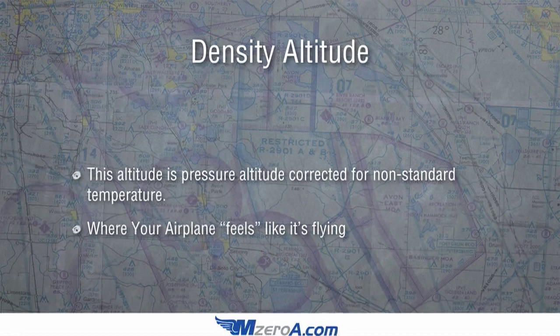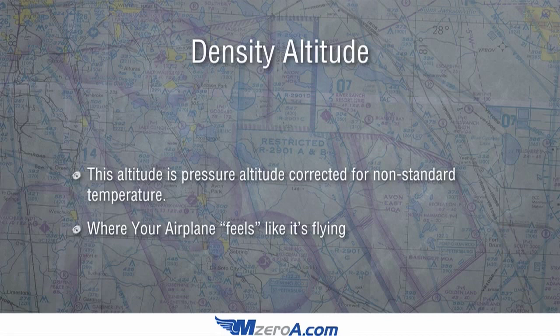Last one here is density altitude. You have to have your pressure altitude if you want to find your density altitude. Density altitude is pressure altitude corrected for non-standard temperature. The way I put it to my students is, it's where your airplane feels like it's flying. If the density altitude is 2,000 feet on the ground, your airplane feels like it's at 2,000 feet already just sitting on the ground. It's especially important flying out west where it gets so hot and that density altitude gets so high, you may not even be able to leave the ground because the airplane feels a lot higher than it really is.